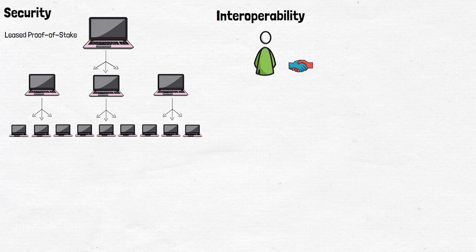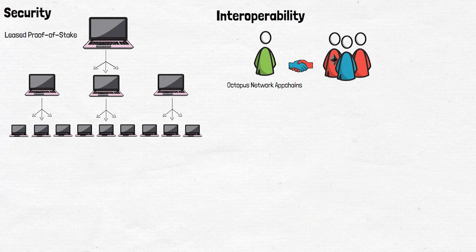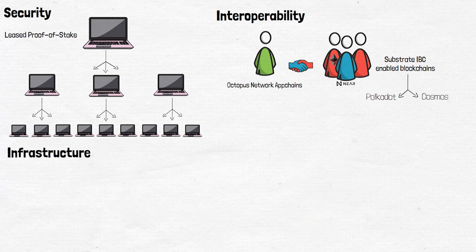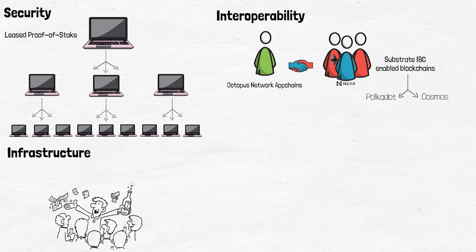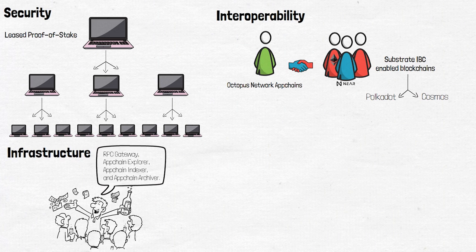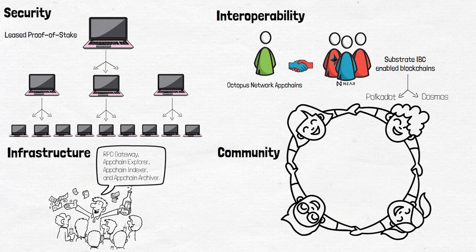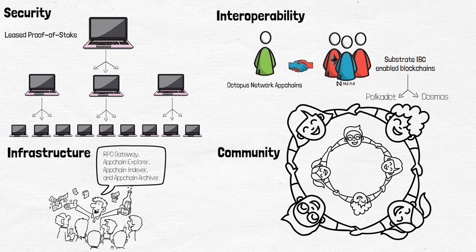The second advantage is interoperability: Octopus Network app chains are interoperable out of the box with Ethereum, NEAR, and any Substrate IBC-enabled blockchains such as Polkadot and Cosmos. The third is infrastructure: the Octopus Network provides a complete infrastructure set for app chains, including RPC gateway, app chain explorer, app chain indexer, and app chain archiver. Fourth is community: the Octopus Network acts as a media community for hatching app chain native communities within the Octopus Network and NEAR Protocol's ecosystem.